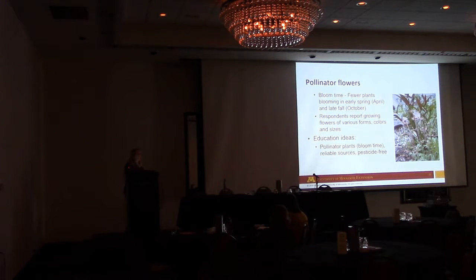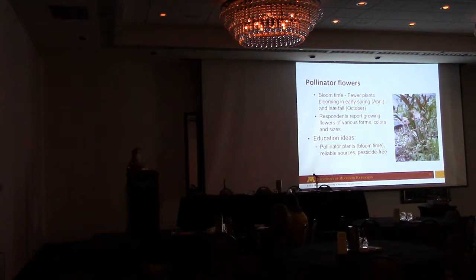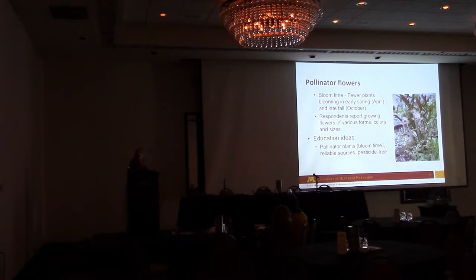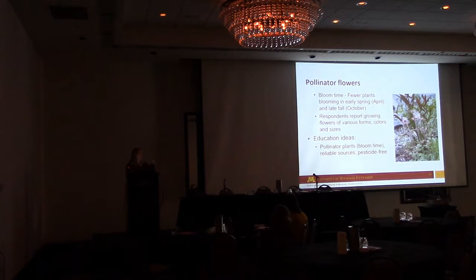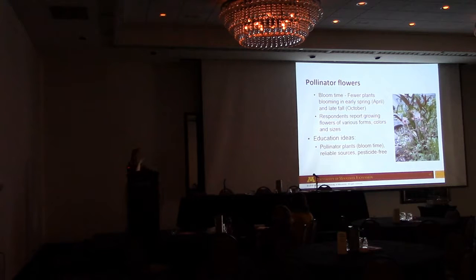Bloom time was very interesting. We asked them to click on the months — April through October — when they had something blooming in their yard, whether trees, shrubs, or herbaceous plants. We got a beautiful bell curve with lots of things blooming June, July, and August, tapering off toward fall. Only about 10% of people reported having something blooming in April. So right there we knew we need to do a better job telling people what to plant for pollinators on those shoulder seasons.